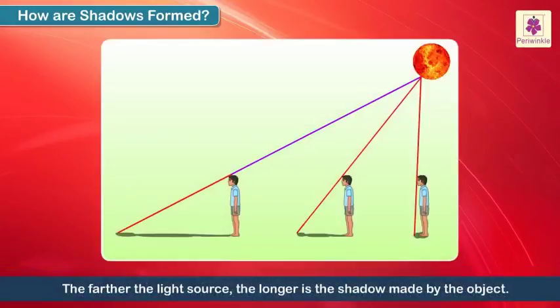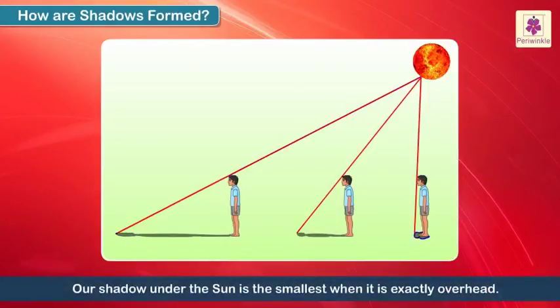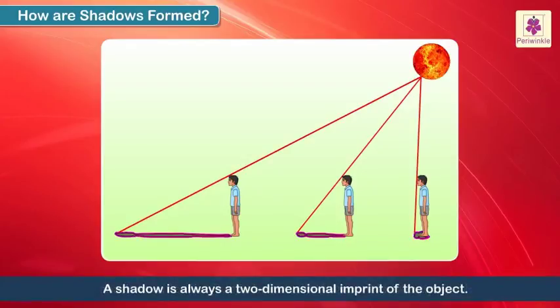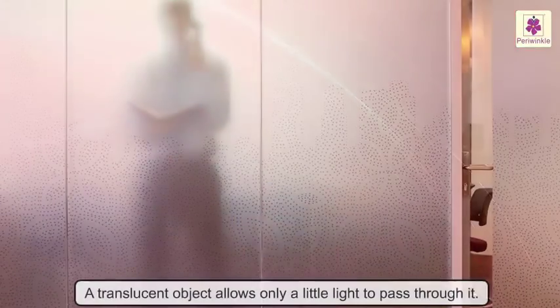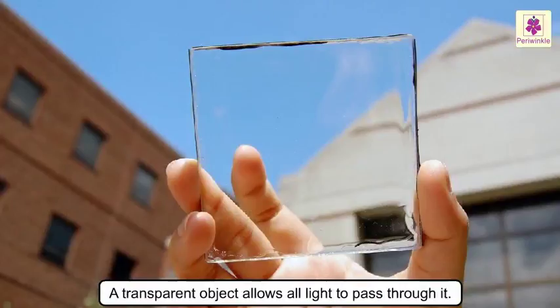The farther the light source, the longer is the shadow made by the object. We observe that the smallest shadow is formed when the Sun is exactly overhead. A shadow is always a two-dimensional imprint of the object. A translucent object allows only a little light to pass through it. A transparent object allows all light to pass through it.